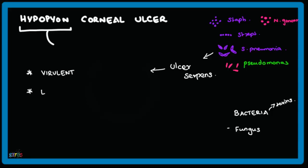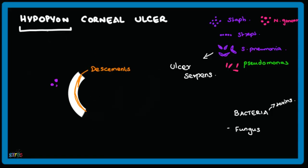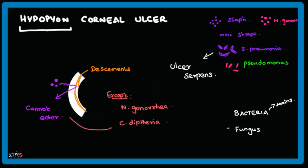Normally, corneal ulcers are caused when the pathogen is highly virulent or the person lacks resistance, as in the case of old, diabetic, and alcoholic patients. The bacteria are generally not able to penetrate the Descemet's membrane. However, the exceptions are Neisseria gonorrhea and Corynebacterium diphtheriae, which can enter through it.